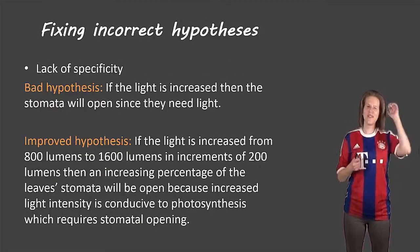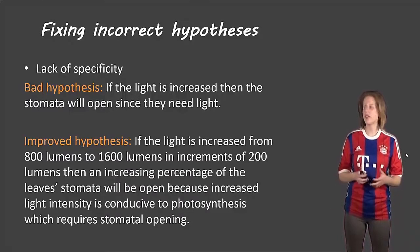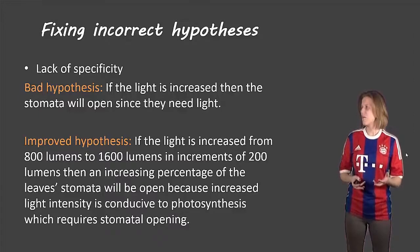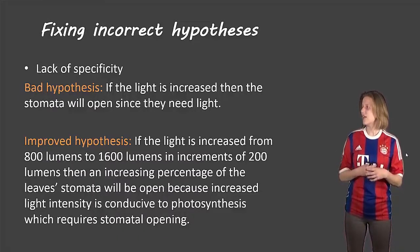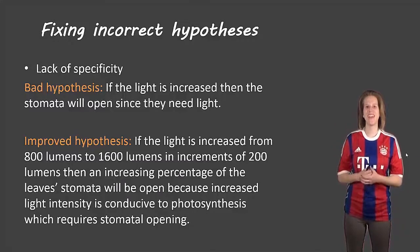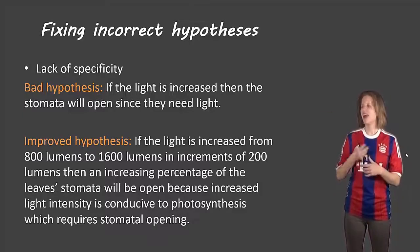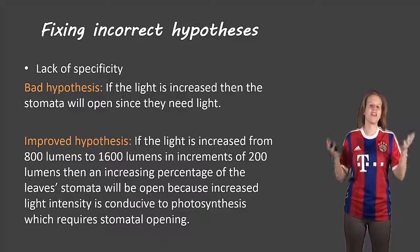If you're looking for really top marks on your lab, be as specific as possible in your hypothesis to eliminate any confounding or interfering variables. Bad hypothesis: 'If the light is increased, then the stomata will open since they need light.' A much better hypothesis with lots of detail: 'If the light is increased from 800 lumens to 1600 lumens in increments of 200 lumens at a time, then an increasing percentage of the leaves' stomata will open because an increased light intensity is conducive to photosynthesis, which requires stomatal opening.' It doesn't just say we're going to increase it — it gives the starting value, ending value, increments, and states we're looking at the percentage of stomatal opening.